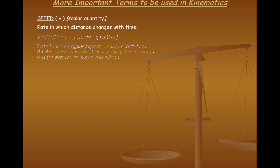A term that's very often confused with speed is velocity. Velocity, which uses the letter lowercase v as well, velocity is a vector quantity. And by definition, velocity is the rate in which displacement changes with time. In other words, velocity tells you how fast you're going, which is your magnitude of speed, and the direction that you're traveling in.